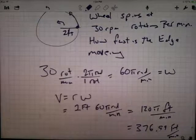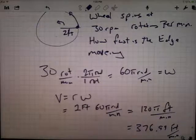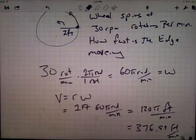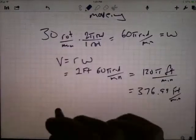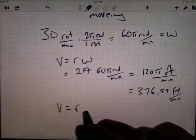If you know angular speed you can find linear speed, if you know linear speed you can find angular speed. The relationship is the linear speed is the radius times the angular speed.